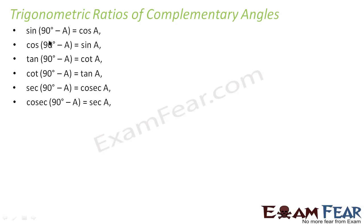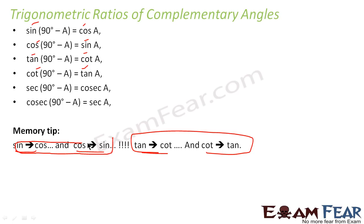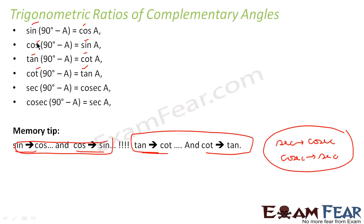That means if you have sin A, you can find sin(90° − A) and that is nothing but cos A. Memory tip: sin becomes cos, cos becomes sin — that's one pair. Tan becomes cot, cot becomes tan — that's another pair. Similarly, sec becomes cosec and cosec becomes sec — that's one more pair. So sin(90° − θ) = cos θ, cos(90° − θ) = sin θ, tan(90° − θ) = cot θ, and cot(90° − θ) = tan θ.